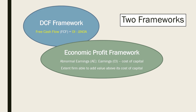The economic profit framework focuses on abnormal earnings — the difference between a firm's earnings, comprehensive income, and its cost of capital. This has the benefit of being a direct measure of value add in a business: the extent to which our firm can add value above its cost of capital.